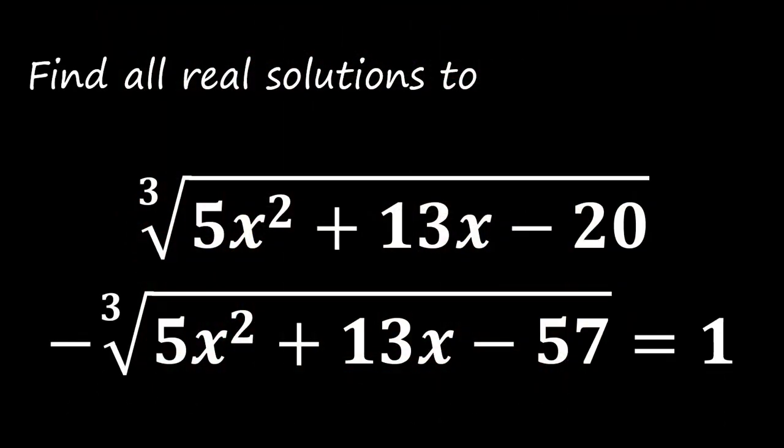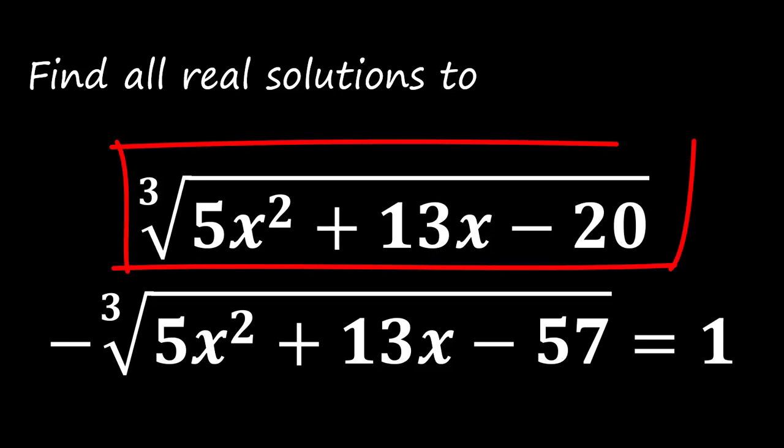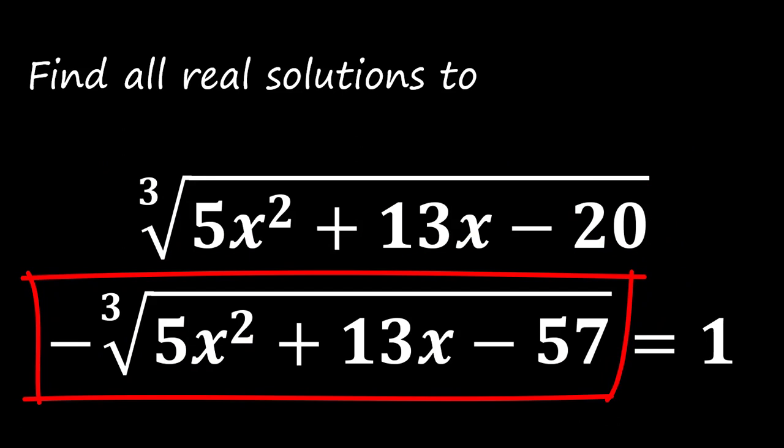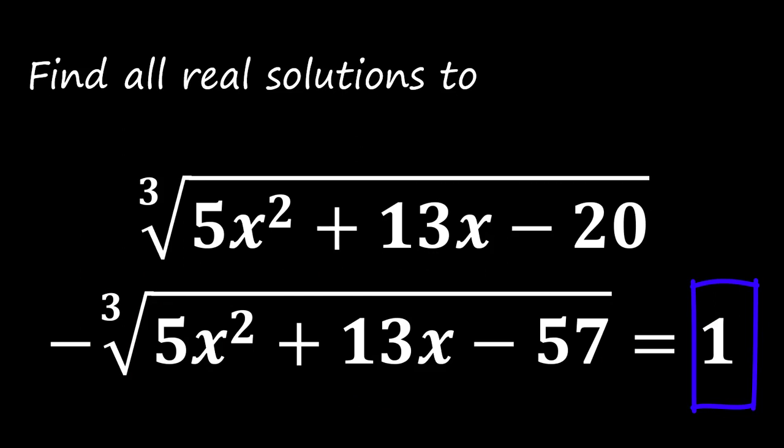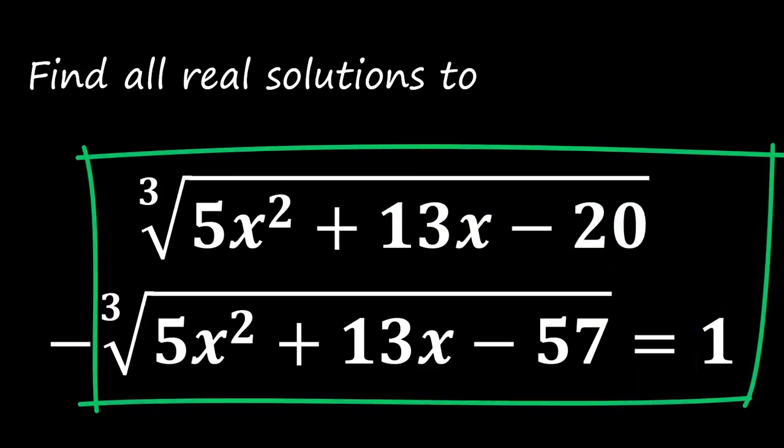the problem: find all real solutions to ∛(5x² + 13x - 20) - ∛(5x² + 13x - 57) = 1. Before we uncover the solution, I encourage you to hit the pause